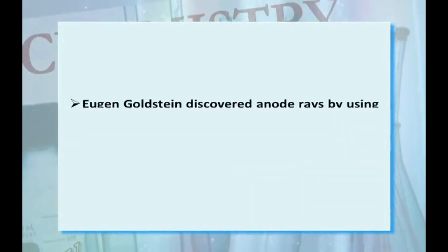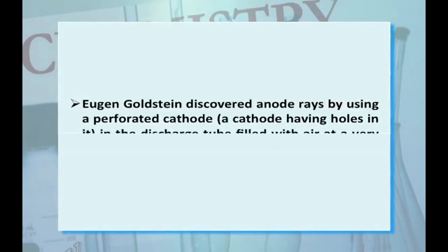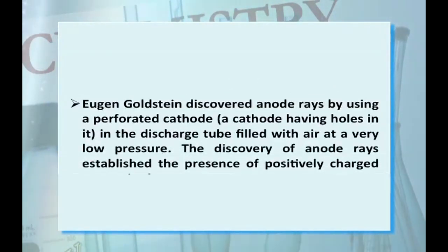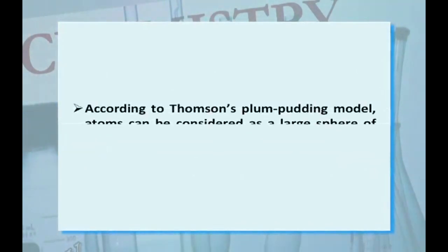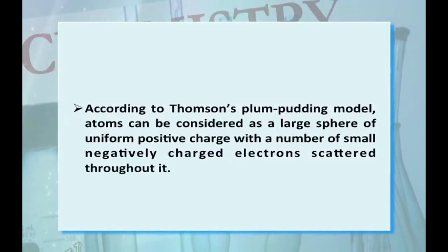Goldstein discovered anode rays by using a perforated cathode, a cathode having holes in it, in the discharge tube fitted with air at very low pressure. The discovery of anode rays established the presence of positive charge proton in the atom. According to Thomson plum pudding model, atom can be considered as a large sphere of uniform positive charge with a number of small negatively charged electrons scattered throughout it.